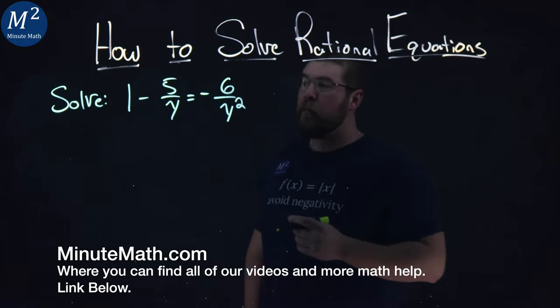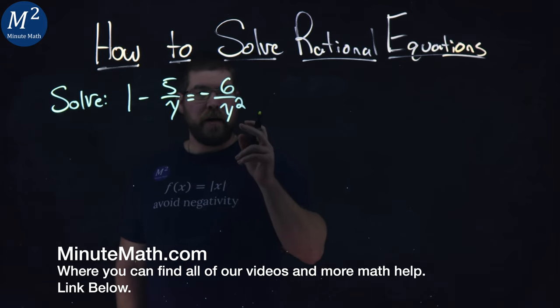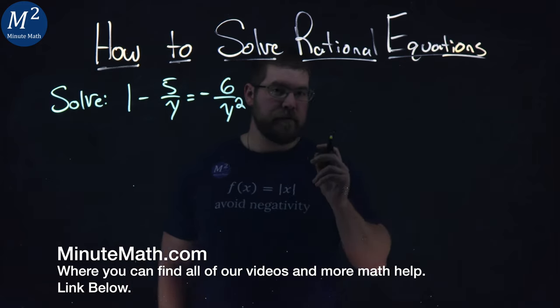We're given this problem right here. Solve 1 minus 5 over y equals negative 6 over y squared.